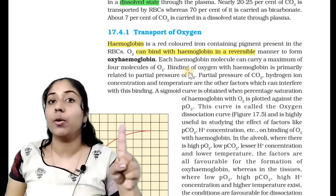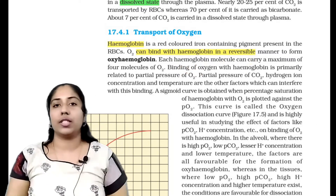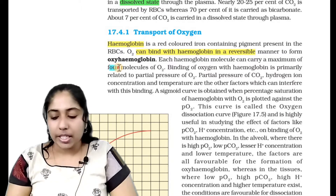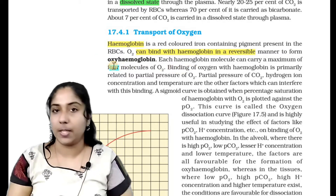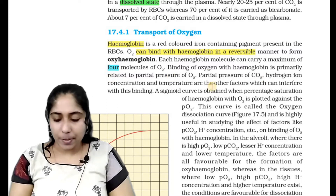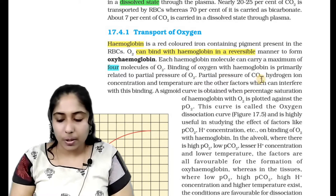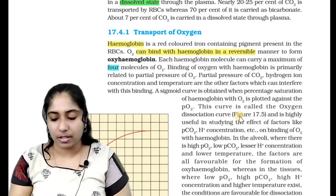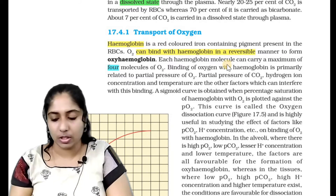Oxygen can bind with hemoglobin in a reversible manner to form oxyhemoglobin. Each hemoglobin molecule can carry a maximum of 4 molecules of oxygen. Binding of oxygen with hemoglobin is primarily related to the partial pressure of oxygen. Partial pressure of carbon dioxide, hydrogen ion concentration, and temperature are the other factors which can interfere with this binding.